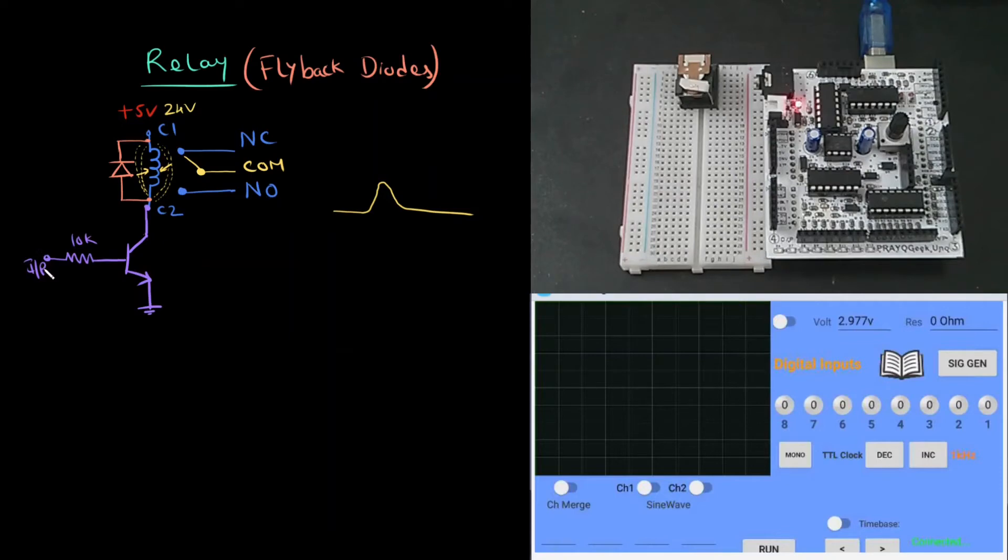So in order to protect our circuit from this voltage spike, we are going to use this diode so that during the voltage spike, this diode will be forward biased and it's going to provide a closed loop for the current to flow here.